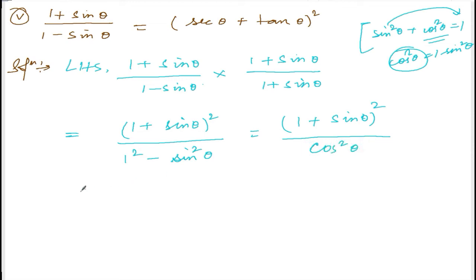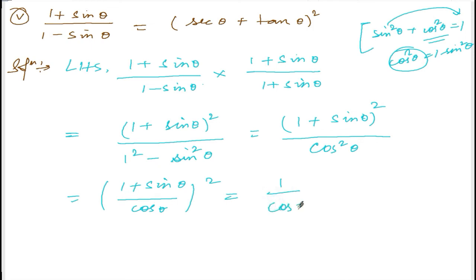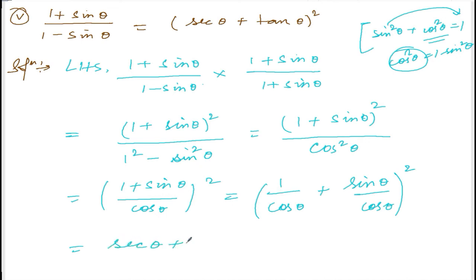Now we have (1 + sinθ)² divided by cos²θ, which we can write as [(1 + sinθ)/cosθ]². We can separate this as [1/cosθ + sinθ/cosθ]², which gives us (secθ + tanθ) whole square.